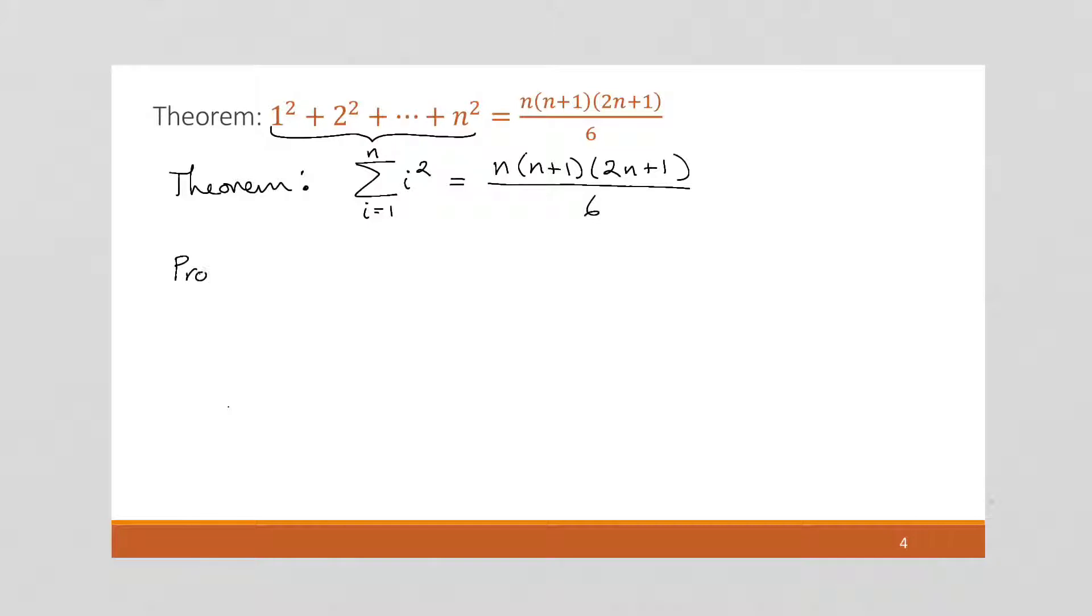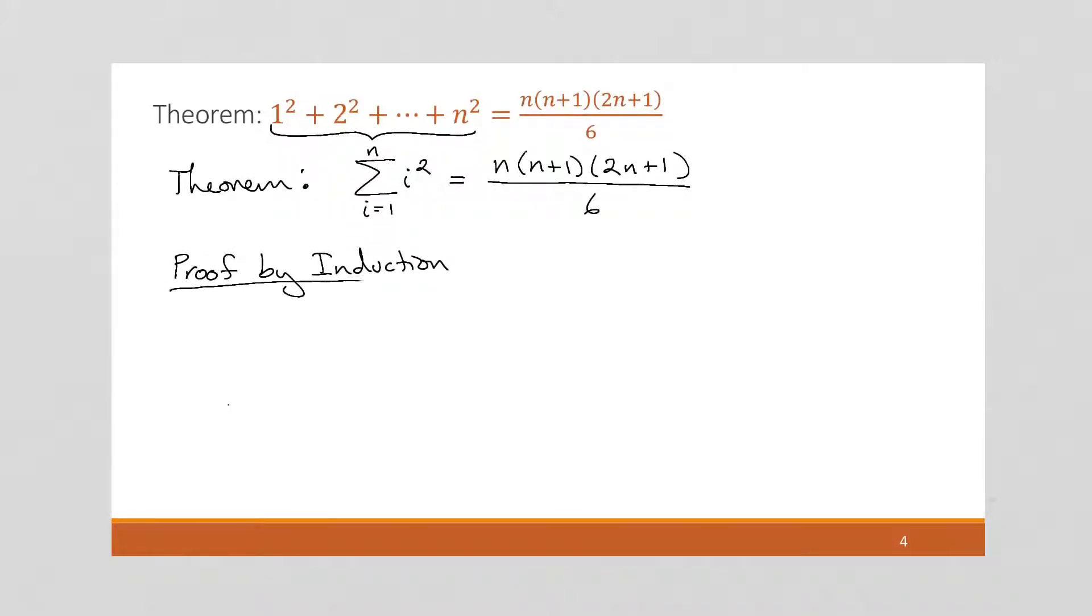And then we're going to do a proof by induction. And the base case is going to be, we look at where our sequence can start. The smallest value that n can have is 1. So for our examples, I'll start at 1, that is by no means required. This just happens to be the way these problems have worked out. So then we want to approach this left-hand side by right-hand side. So the left-hand side, we're going to put this in: i equals 1 to 1 of i squared. It's going to be 1 squared, which is 1.